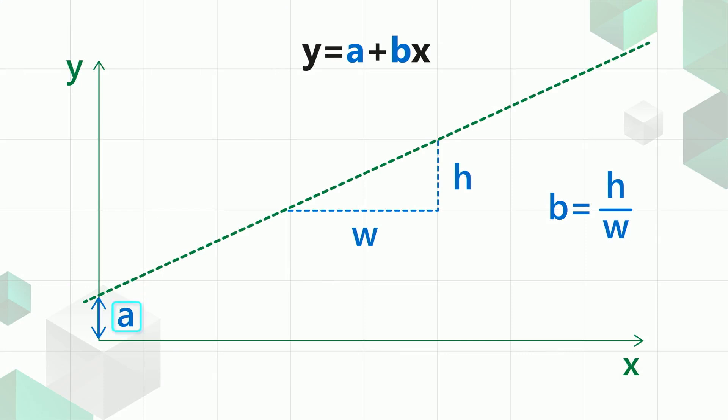In this formula, a represents the value of y where the line intersects the y-axis, and b represents the slope of that line.